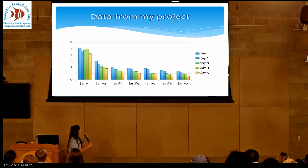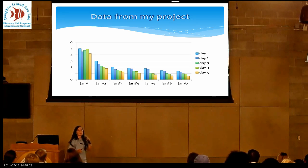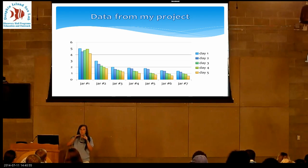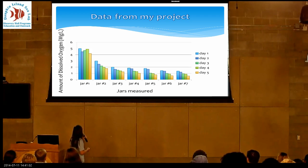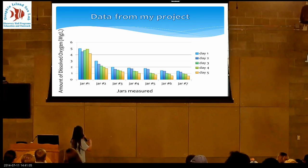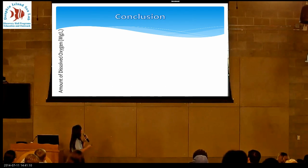The data looks really complicated, but all you need to see is that there's a dramatic decrease — not only with the amount of fertilizer added, but also with the days it sat in the jars. It just continued to decrease with both days and amounts of fertilizer. It was measured in milligrams per liter of dissolved oxygen and there was just a really big decrease.